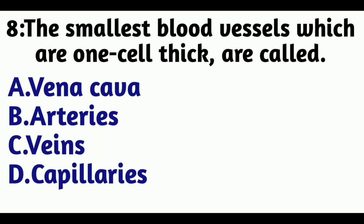Question 8: The smallest blood vessels which are one cell thick are called — Option A: Vena Cava, Option B: Arteries, Option C: Veins, Option D: Capillaries. The answer is Option D, Capillaries.